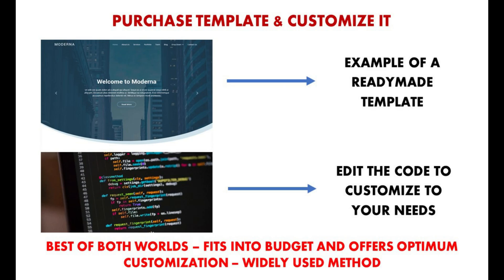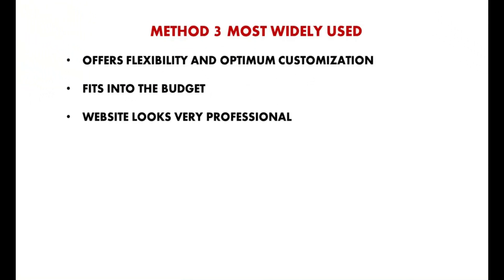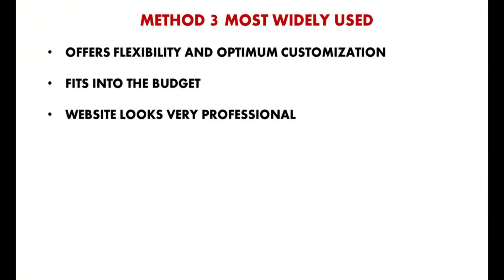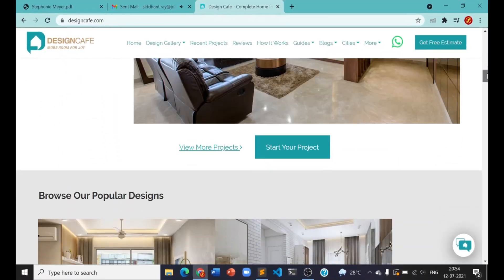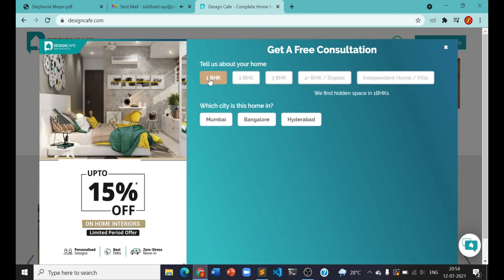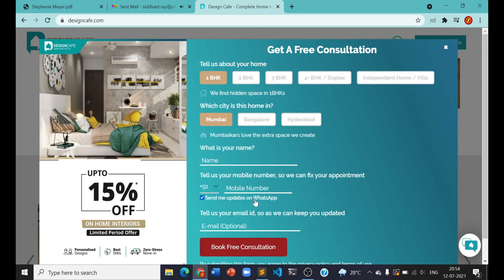Whatever is to be customized or changed in the template can be easily done by the web designer. So this method of website creation is more economical than method 2 and way better than creating a basic and predictable website using WordPress or Wix.com. In terms of customization, it virtually offers almost the same flexibility as method 2. Hence, this method is widely used and most preferred by web designers. It is fairly economical compared with writing the full code from scratch. Approximately two-thirds of the websites made today follow this methodology. This is how a website created with a purchased template would look like — just look at the customization, class, and uniqueness of this website.